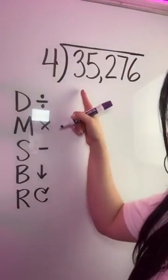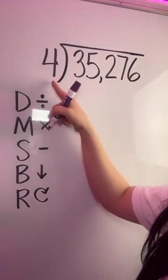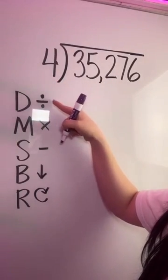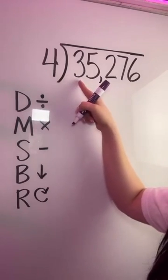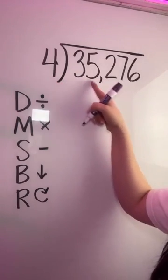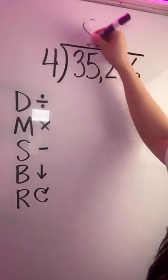So let's say we wanted to simplify 35,276 divided by four. You're going to grab your divisor and you're going to divide first. Can four go into three? No, we're going to extend it to two digits. Can four go into 35? Yes, only eight times.